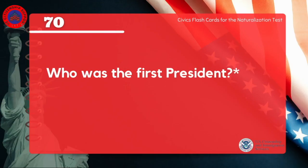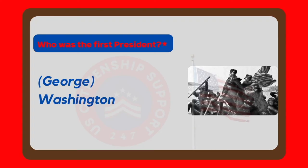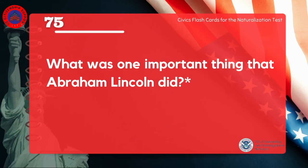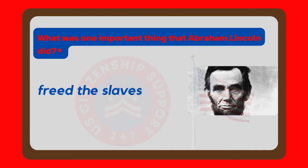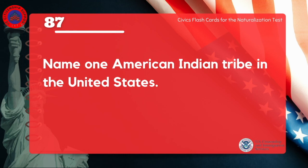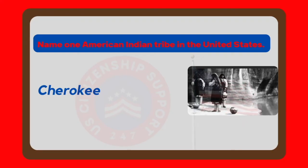Who was the first president? George Washington. What was one important thing that Abraham Lincoln did? Freed the slaves. Name one American Indian tribe in the United States. Cherokee.